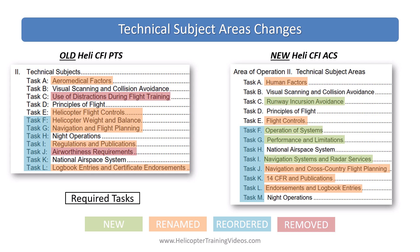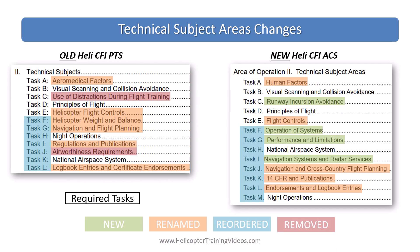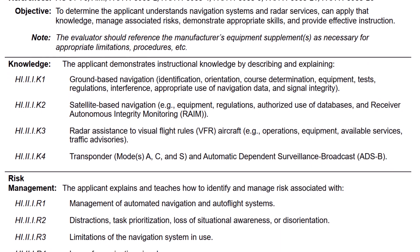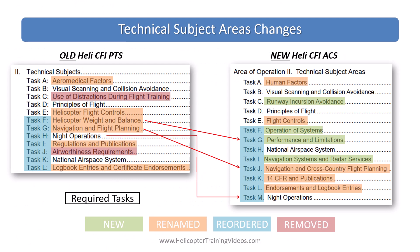In the technical subject areas, there are quite a lot of changes. Aeromedical factors becomes human factors. The use of distractions during flight training has been removed — those distractions are now spread throughout different tasks as risk management elements. They added a new runway incursion avoidance task. Helicopter flight controls was reduced down to just flight controls, and there's a new operation of systems task that was moved from area of operations three pre-flight preparation. Helicopter weight and balance was merged into performance limitations, which is a new task. Navigation and flight planning was moved into navigation and cross-country flight planning. Another new task is navigation systems and radar services with a whole new set of knowledge, risk management and skill elements.